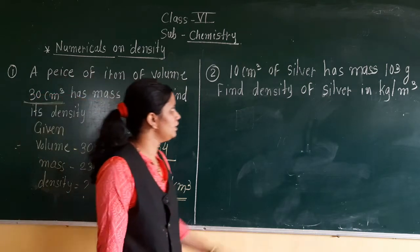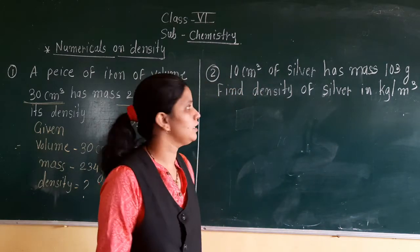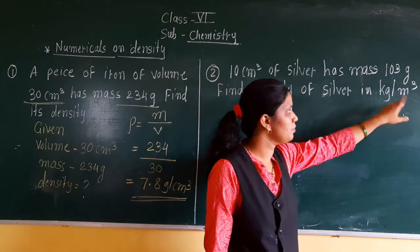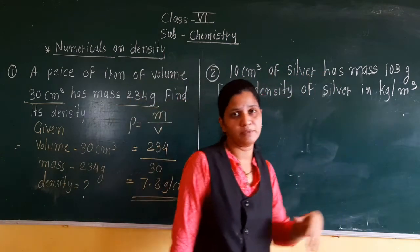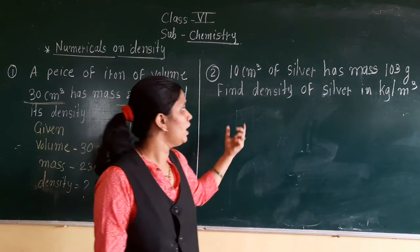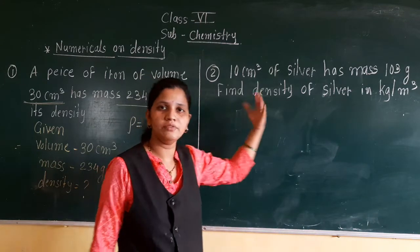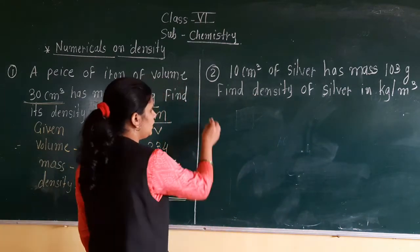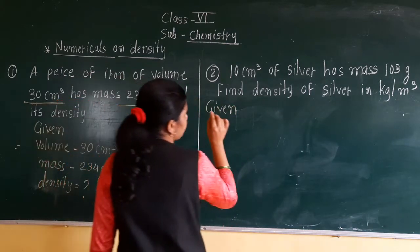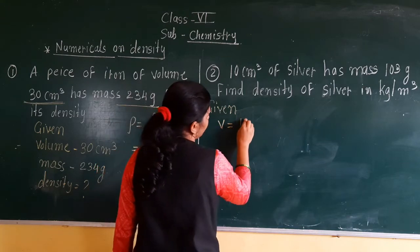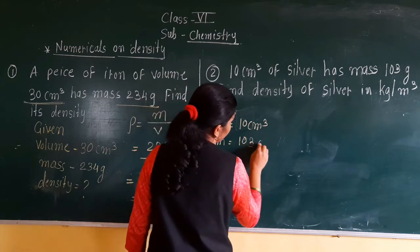Now the second example: 10 cm cube of silver has mass 103.5 gram. Find the density of silver in kg per meter cube. Both quantities — centimeter cube and gram — are in CGS units as given. We have to find the density in kg per meter cube, but we will do the conversion at the end. So first, what is the given quantity? Volume V is equal to 10 cm cube. Mass is equal to 103 gram.